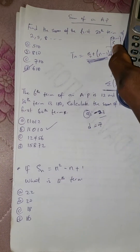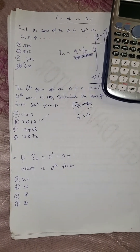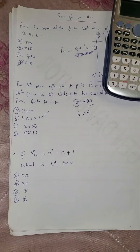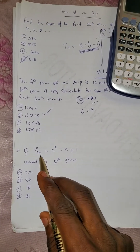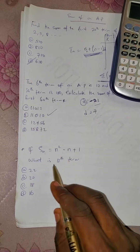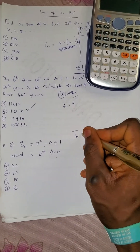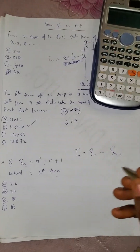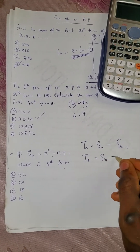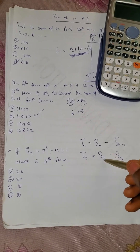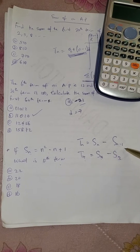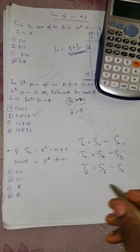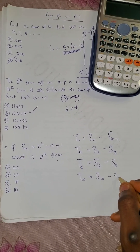I hope you have learned a lot about the sum of an AP and finding the nth term. Now there is a question type they normally give: if SN — which represents the sum of an AP — equals a given expression, what is the 12th term? There is a shortcut formula that says the Nth term equals SN minus S(N minus 1). So if I am looking for the 4th term, it is S4 minus S3. For the 6th term, it is S6 minus S5. For the 10th term, it is S10 minus S9.